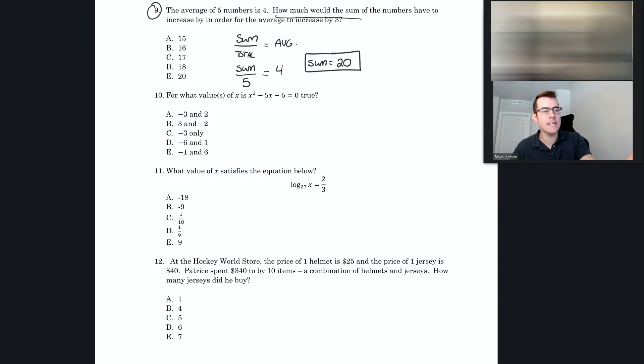Now the question is, how much would that sum have to increase by so that our average increases by three? So we want the average to go from four to seven. If the sum is 20 right now, which answer, when you increase it by that amount, would make the whole thing come out to be seven? It's going to be 15, choice A, because 20 plus 15 gives us 35, and 35 divided by five is seven.